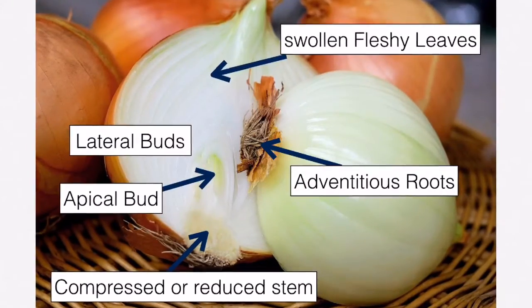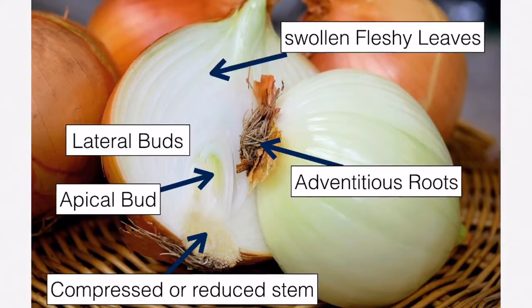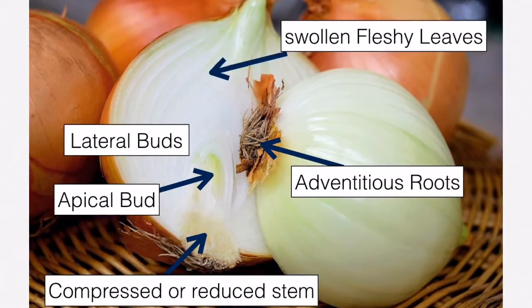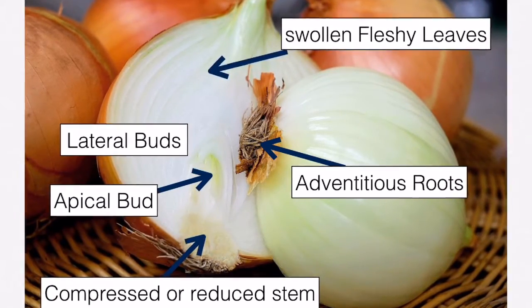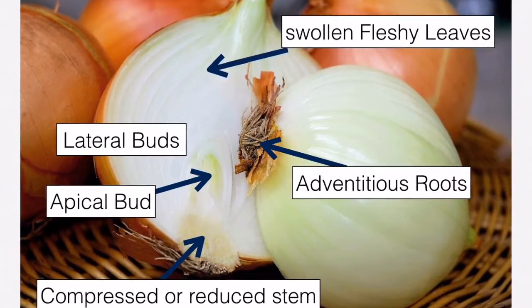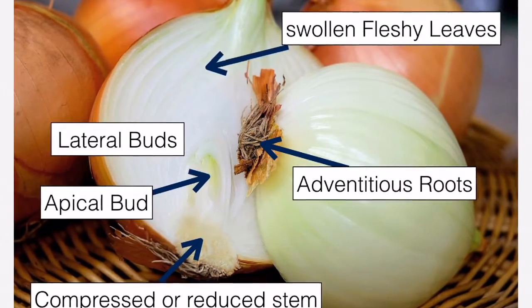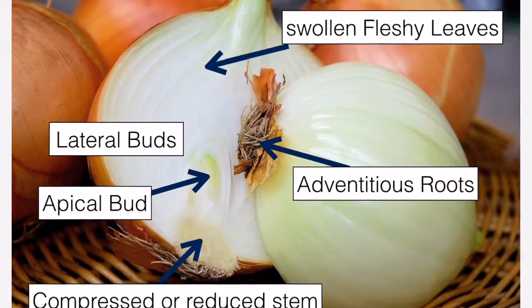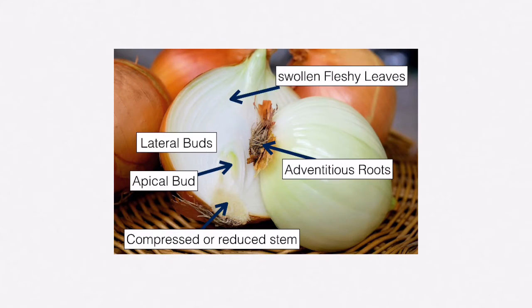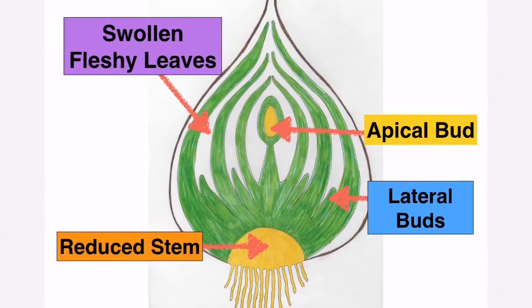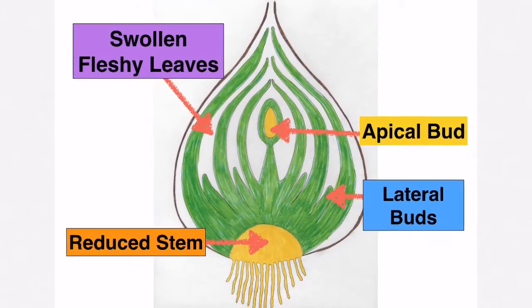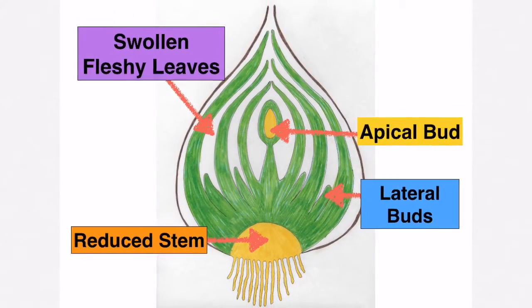To help you make sense of this, let's look at the structure of a bulb. This is an onion — it's a bulb and we've cut it in half. In the picture, you can see those swollen fleshy leaves, the part of the onion that we actually eat. At the base of the bulb, you can see the compressed or reduced stem. And at the very centre, you can see the apical bud.